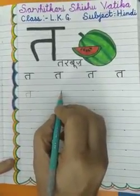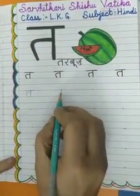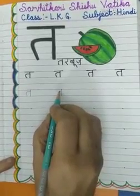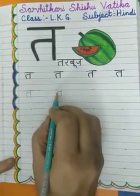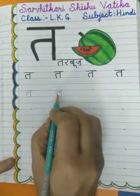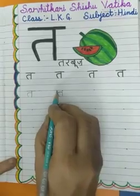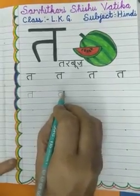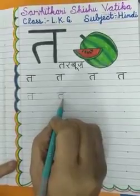Again, standing line. Make a slipping line. And turn in this shape. Now, make a slipping line. T. Tarbooz.